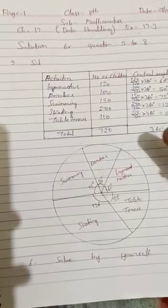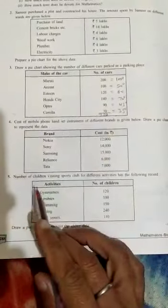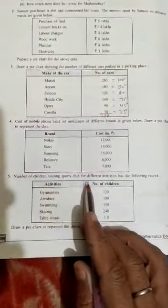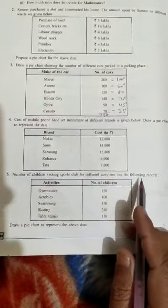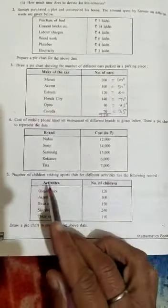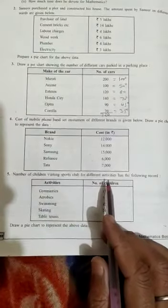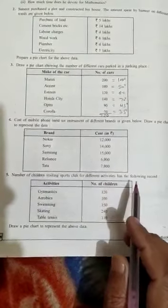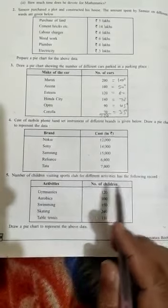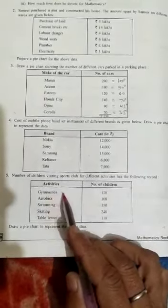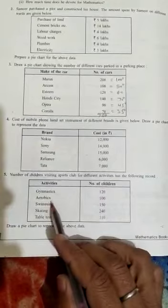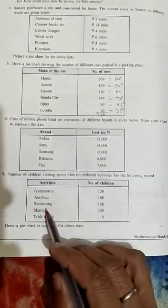Let us start question number five. Number of children visiting sports club for different activities has the following record: Activities - Gymnastics 120 students, Aerobics 100, Swimming 150, Skating 240, Table Tennis 110.